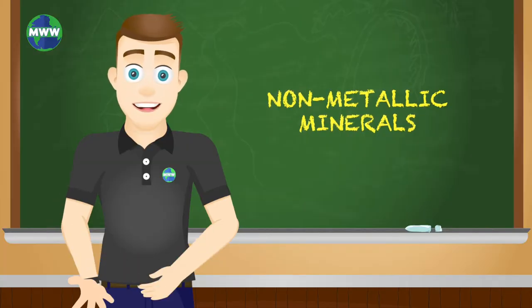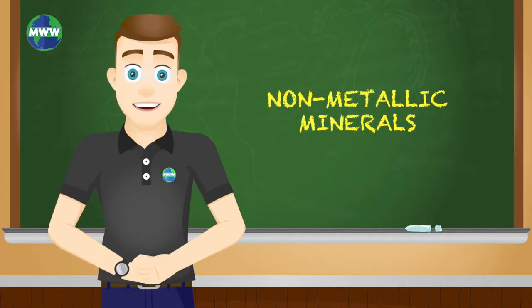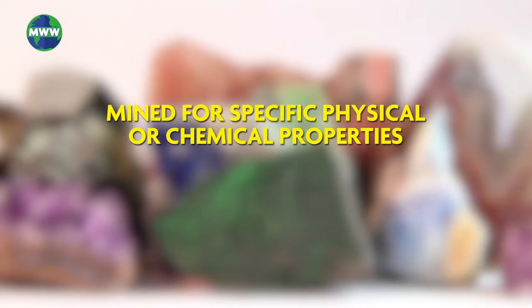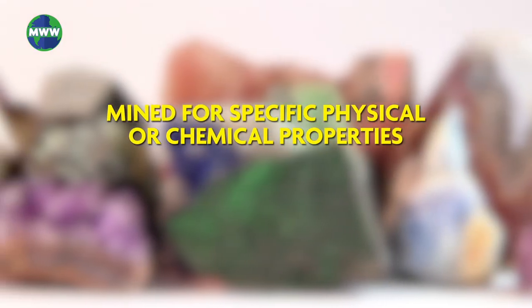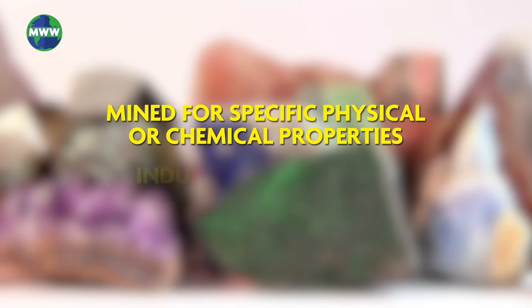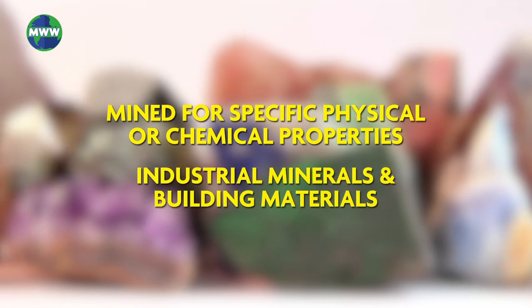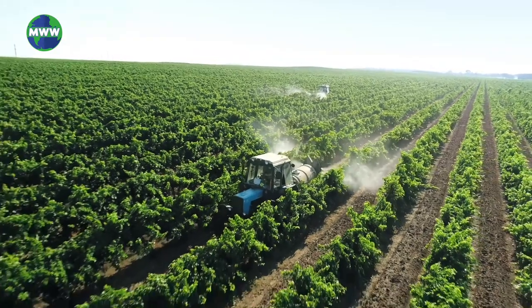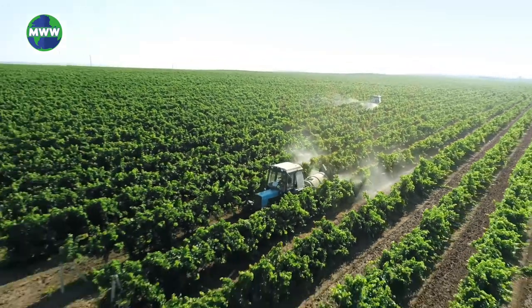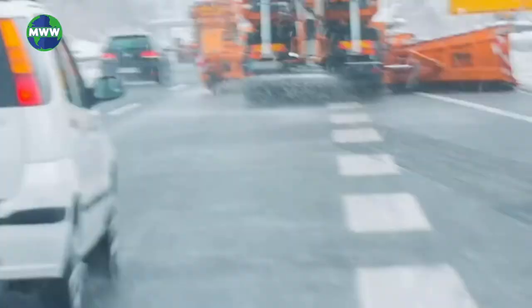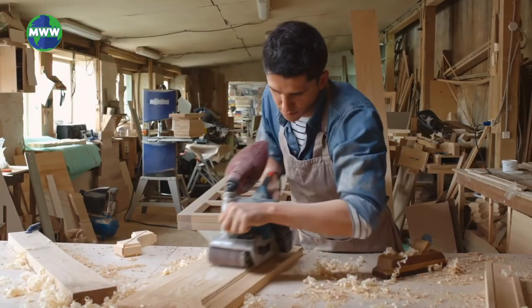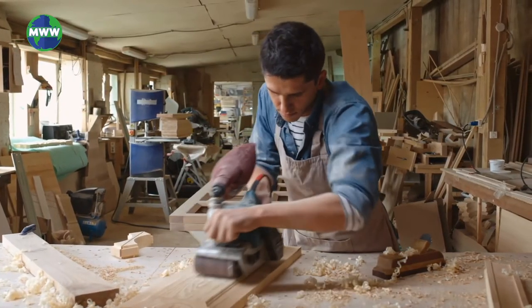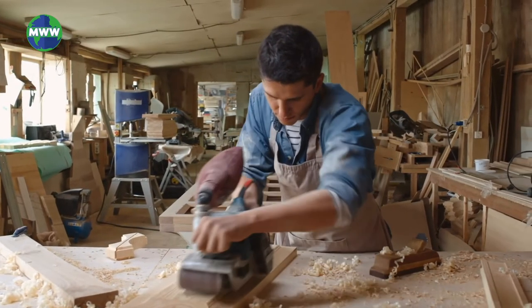Minerals that are not used as fuels or a source for metals are non-metallic mineral resources. These are mined for their specific physical or chemical properties. There are two main groups: industrial minerals and building materials. Industrial minerals are used for fertilizers, ice melt, sandpaper, and other products to make your life more convenient.